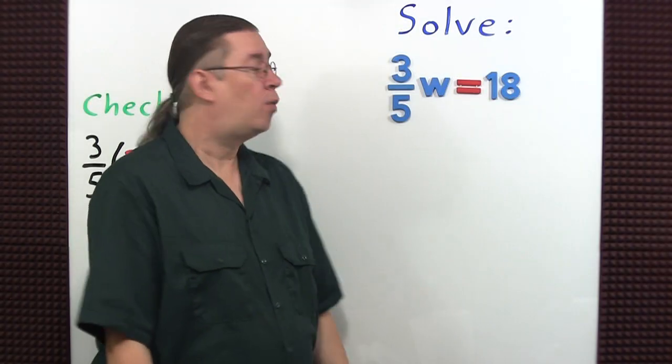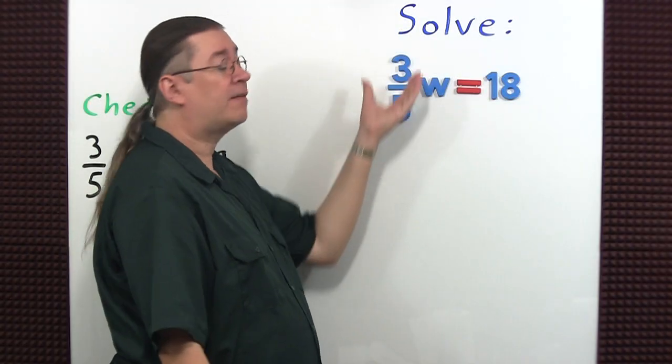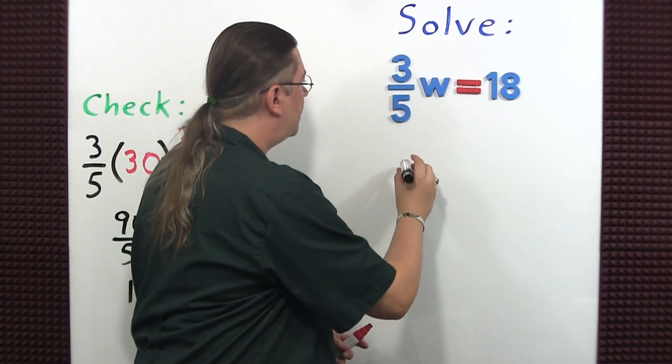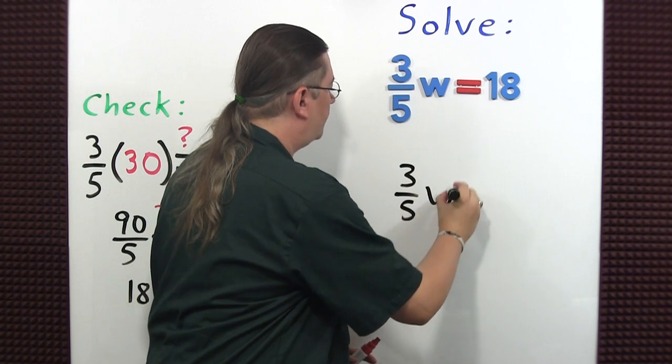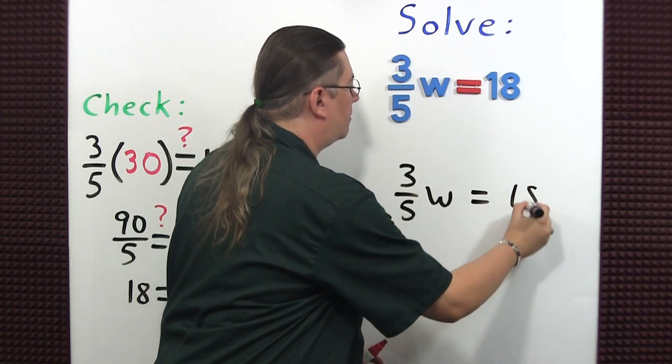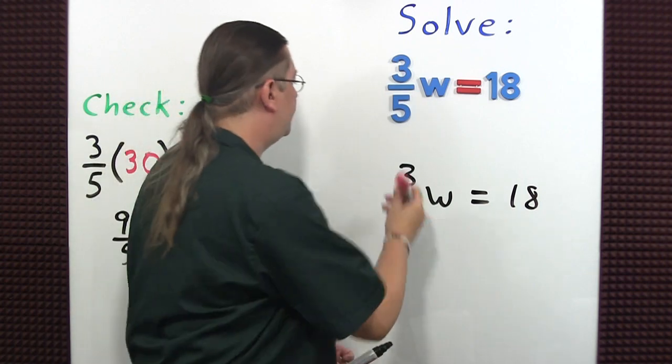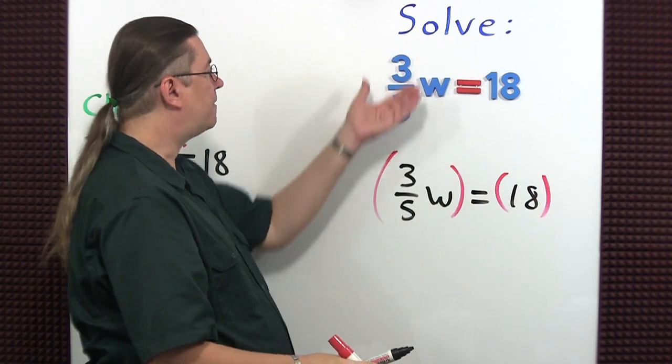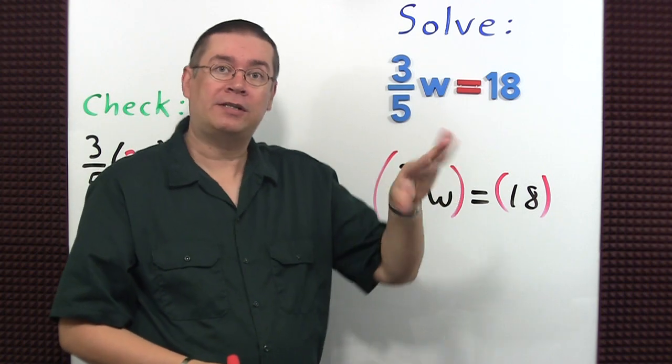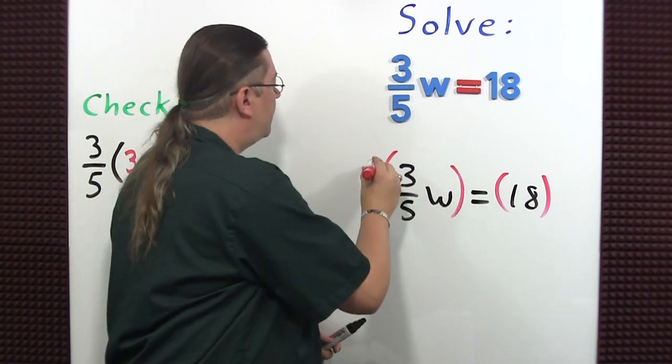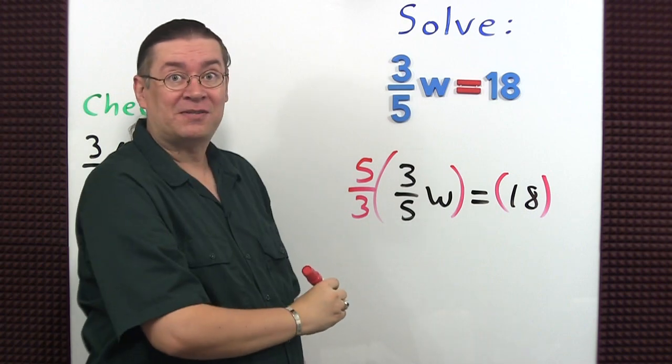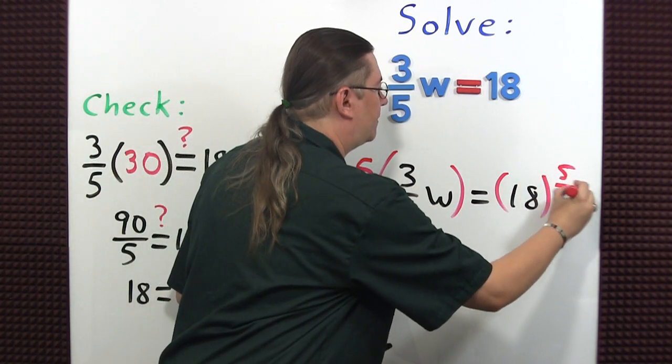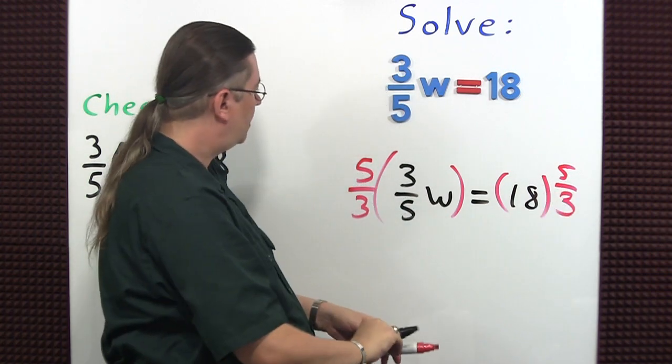We need to use reciprocals when the variable is being multiplied by a fraction. Why? Well, let me show you. First, I'm going to rewrite the equation. I'm going to multiply both sides by the reciprocal of three-fifths. So you just switch the numerators and denominators: you're going to have five-thirds. What you do to one side, you must do to the other.